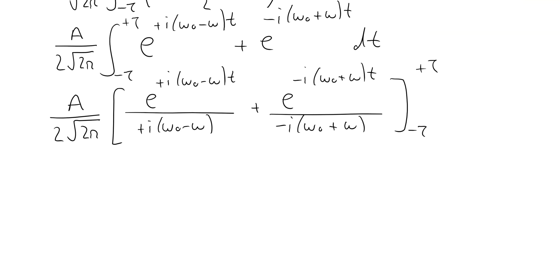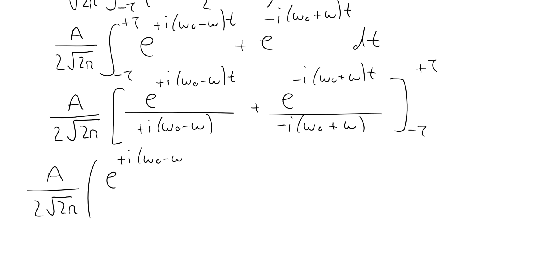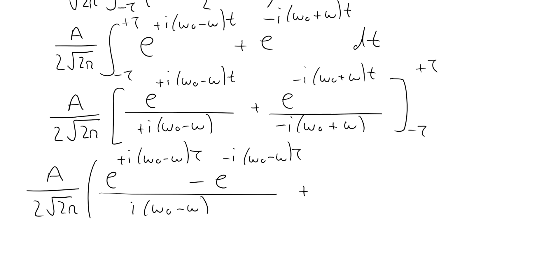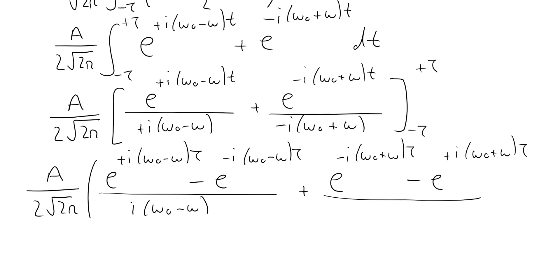When we put in the limits, we get four terms. We get a divided by the square root of 2 pi, with the factor of 2. The upper limit for the first term gives e to the plus i(omega-0 minus omega)tau, minus e to the minus i(omega-0 minus omega)tau, all over i(omega-0 minus omega). The second term gives e to the minus i(omega-0 plus omega)tau minus e to the plus i(omega-0 plus omega)tau, all divided by i(omega-0 plus omega).